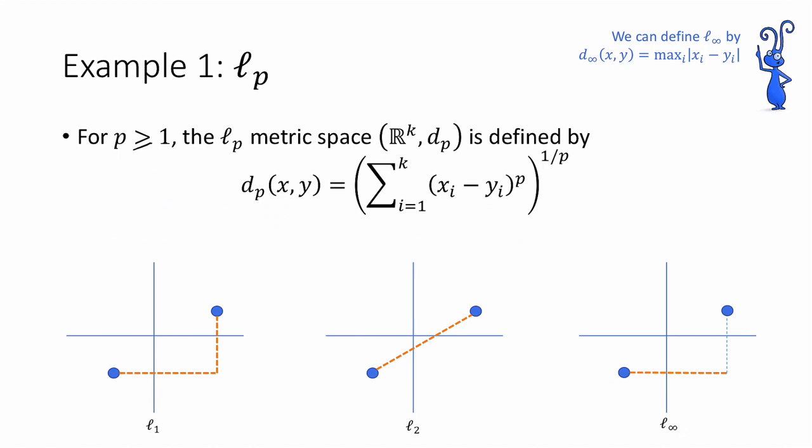So let's see some examples of metric spaces. The first example is Lp. So for any p ≥ 1, the Lp metric space (ℝᵏ, dₚ) is defined as the metric space where the set is ℝᵏ, and the metric is dₚ, defined as the sum from i = 1 to k of |xᵢ - yᵢ|ᵖ all raised to the 1/p. This is also written as the p-norm between x and y.